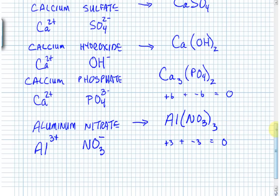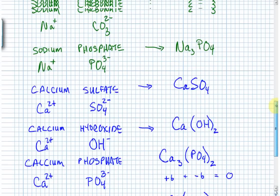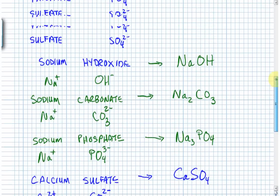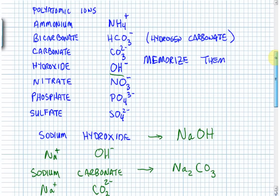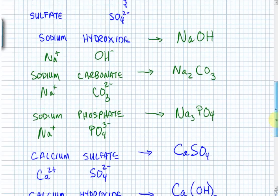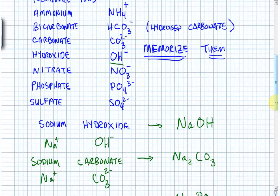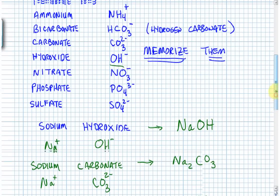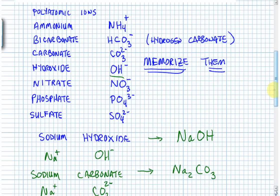I've given you enough information to work through these on your own. I can't emphasize enough that you just have to sit down and memorize these polyatomic ions. If you do that now, you'll be successful, and before you know it you'll know these ions without even thinking about it. In the next lesson, we'll start with formulas and go to names — that's an easy one.